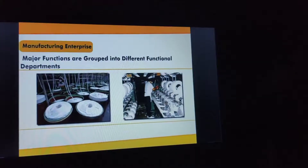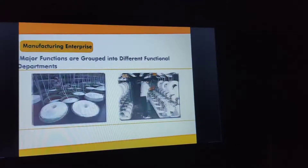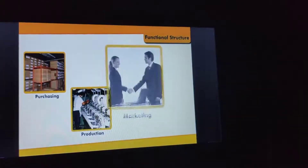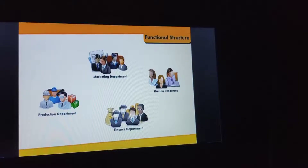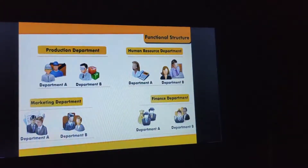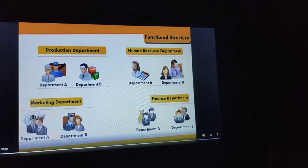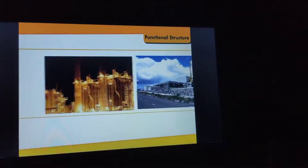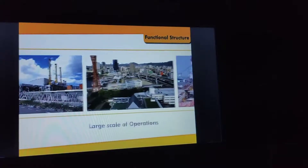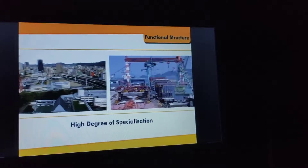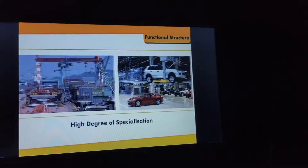In a manufacturing enterprise, major functions are grouped into different functional departments like purchasing, production, marketing, and research and development. On the basis of these functions, various departments are created, and this way they form a structure of the organization. This type of structure is suitable for large-scale organizations where a high degree of specialization is required.